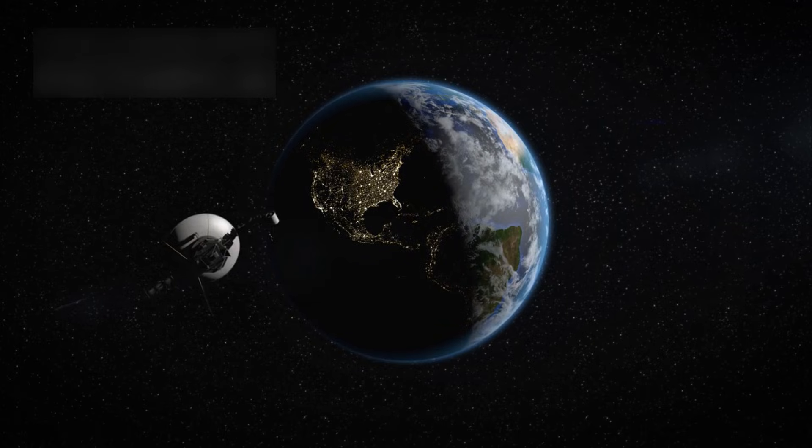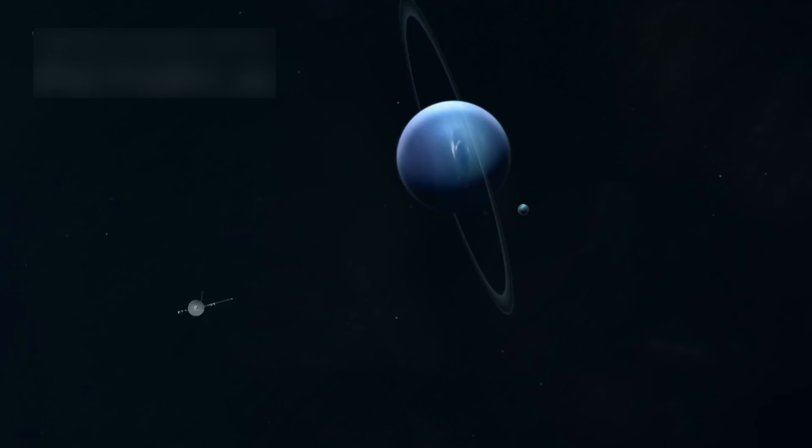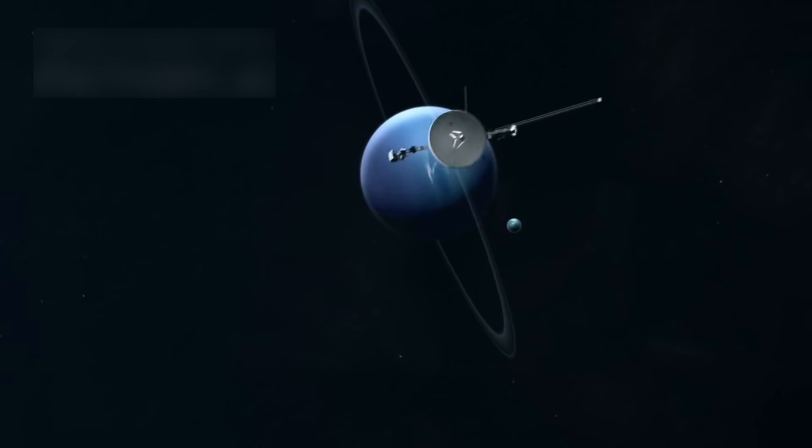Voyager 1, built with 1970s technology, went far beyond its original purpose. It became a pioneer, sending back stunning and detailed data of planets, their rings, and moons.